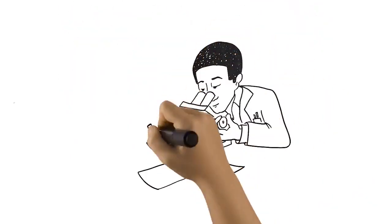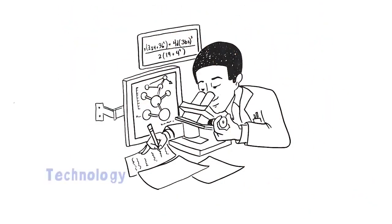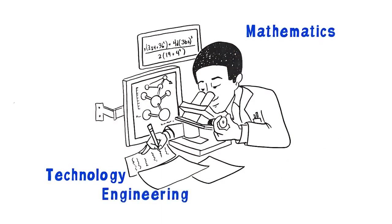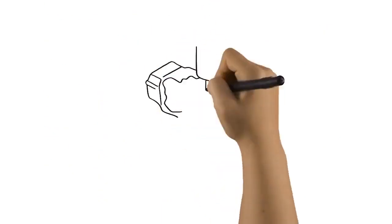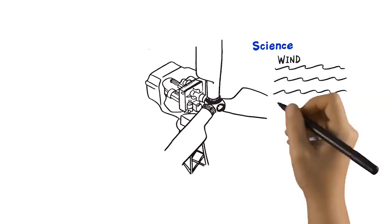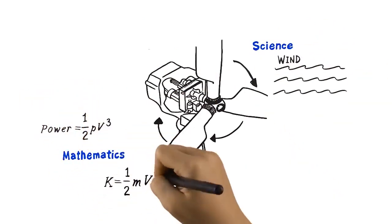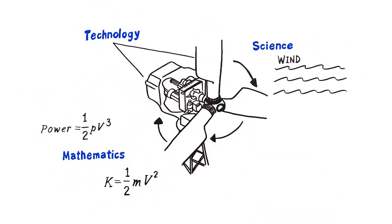After all, in the real world, science relies on technology, mathematics, and engineering. And engineering depends on findings from science, the application of mathematics, and the use of technological tools.